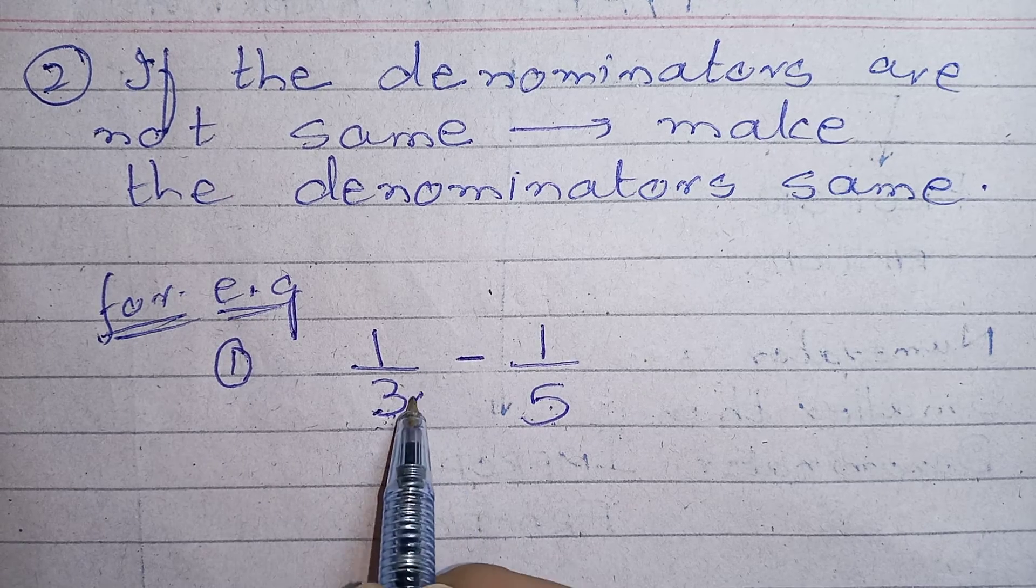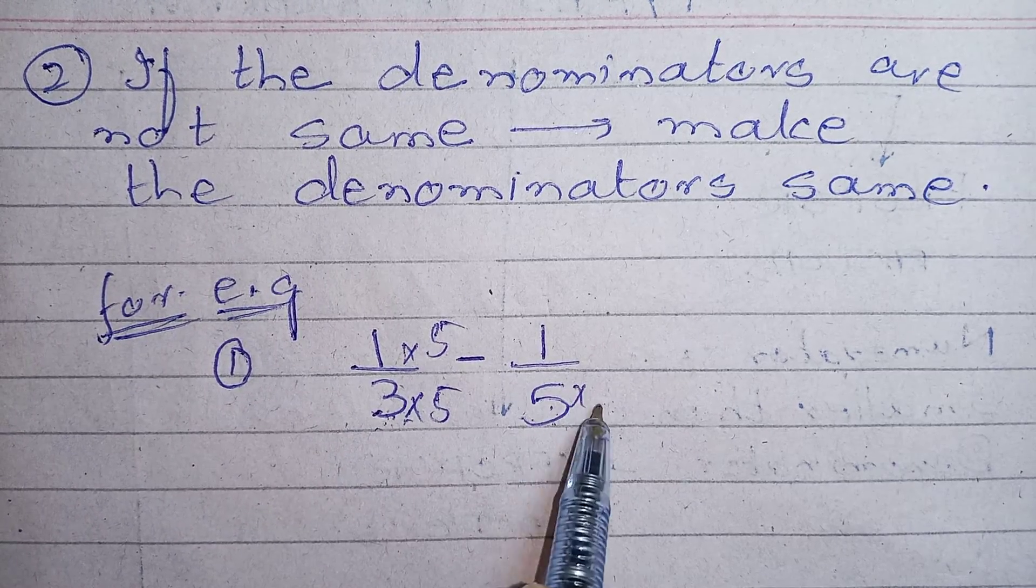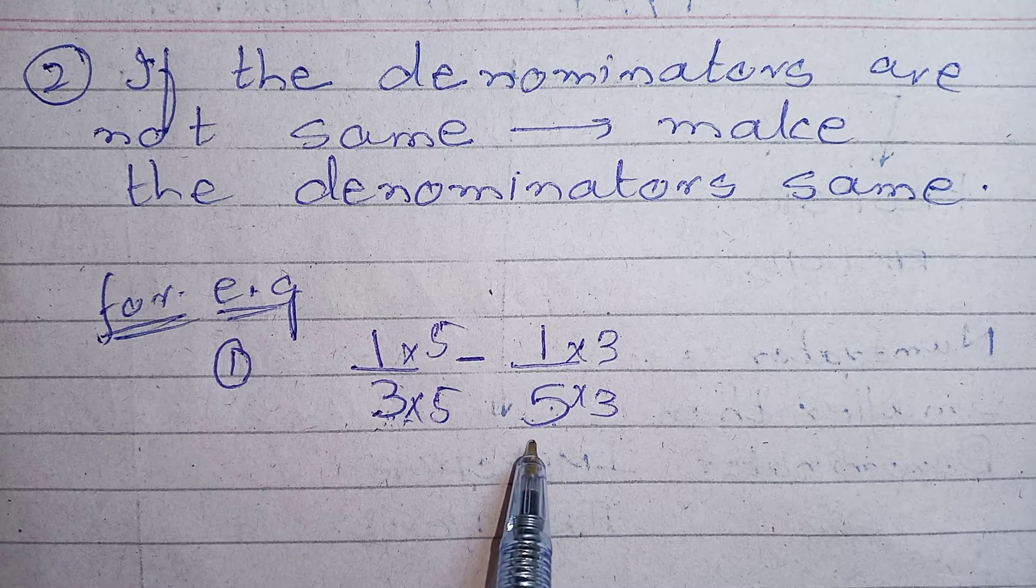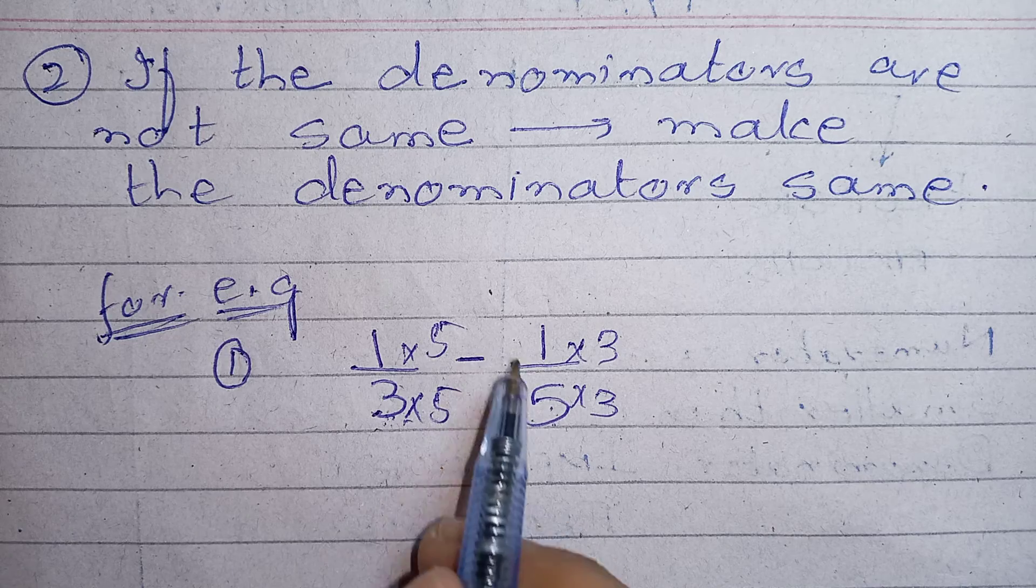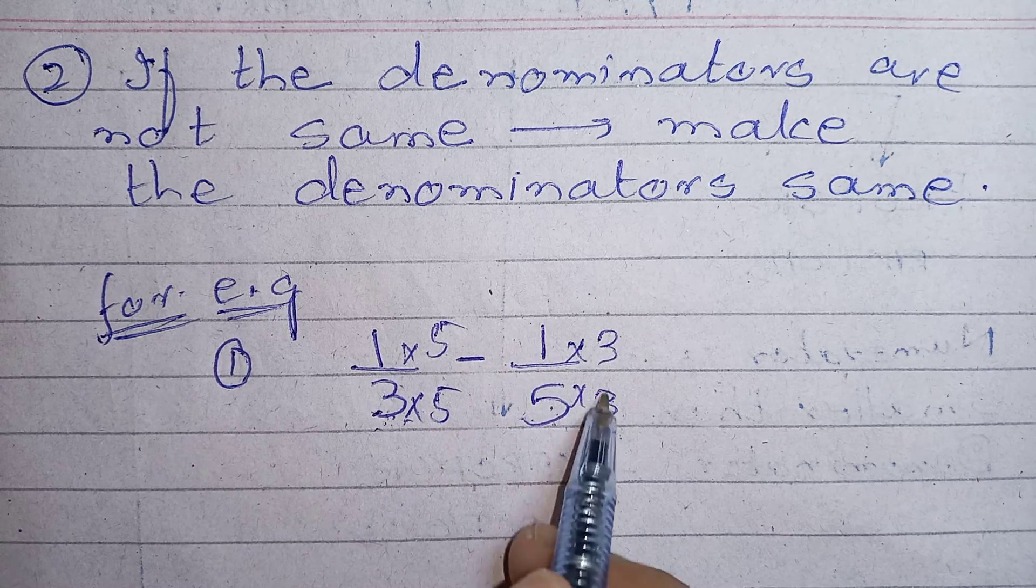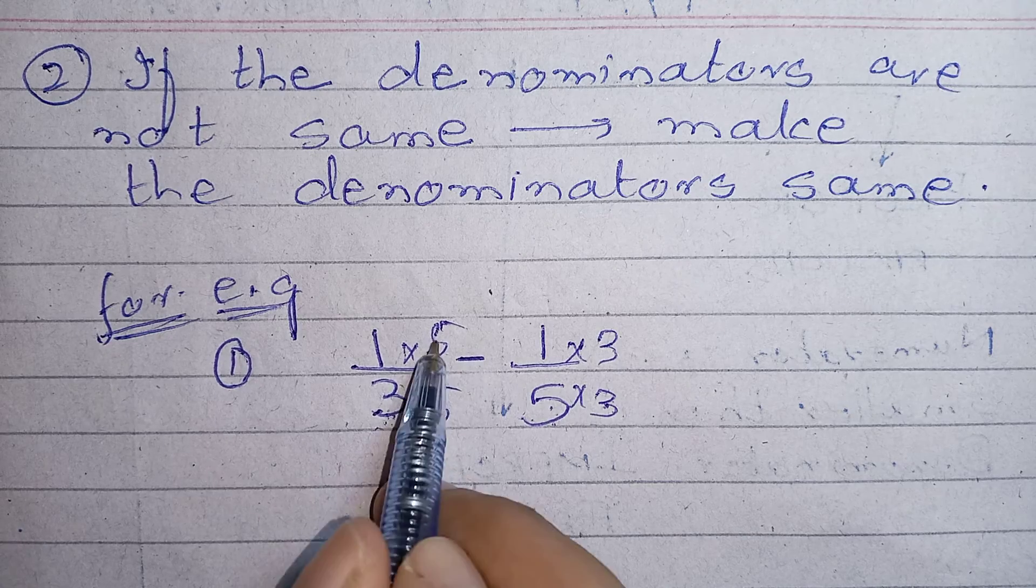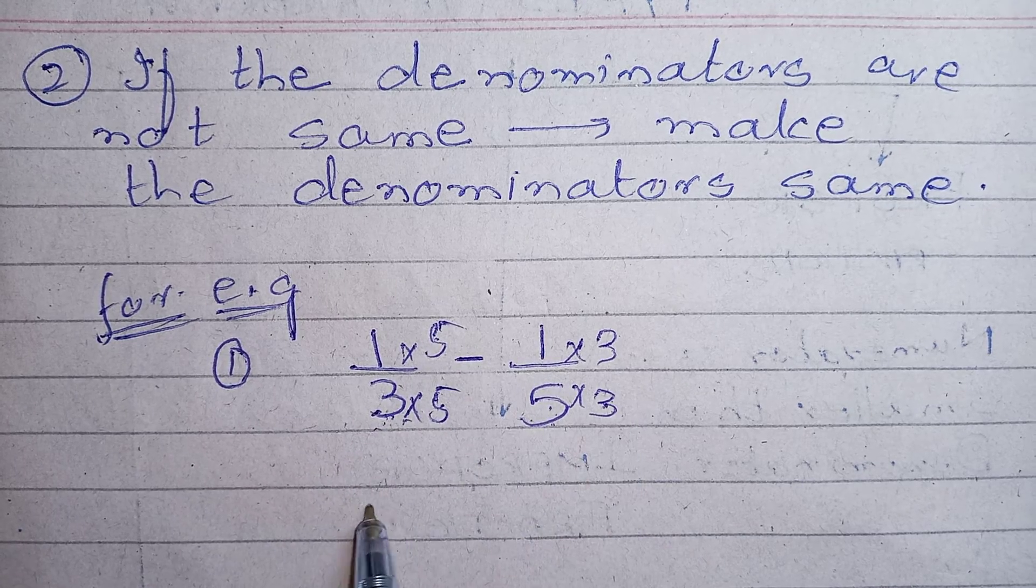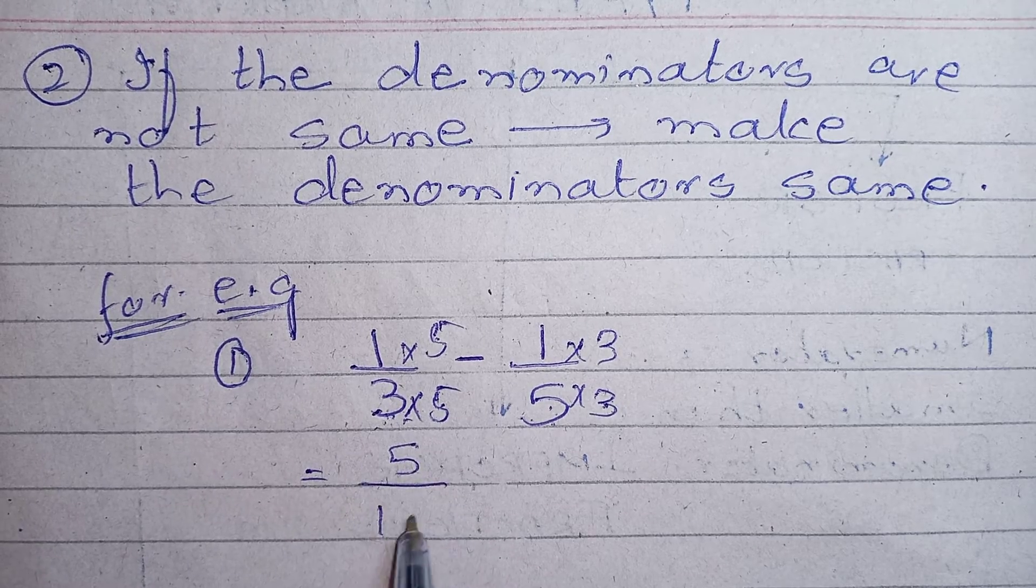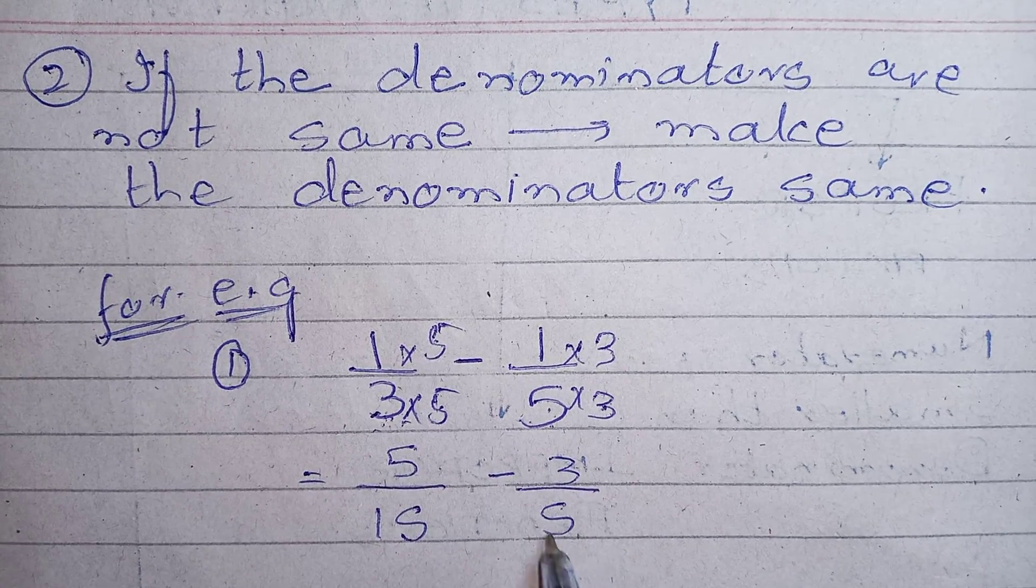In this case it is 15. And whatever you are multiplying the denominator with, you have to multiply the numerator of the same fraction with the same number. 3 times 3, 5 times 5. And my answer will be 5 upon 15 and 3 upon 15.